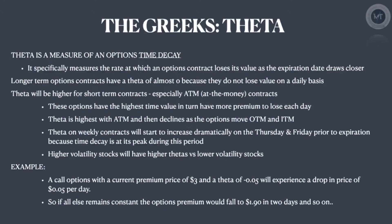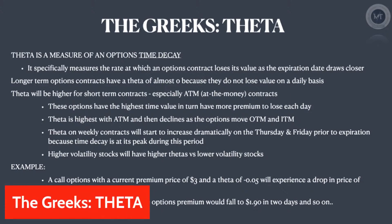Theta is basically a measure of an option's time decay — meaning the rate at which the option's premium price is going to decline and lose its value as it approaches the expiration date. Every contract has an expiration date and a premium price, and theta measures how much value that contract is losing every day as it gets closer to expiration.